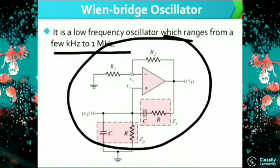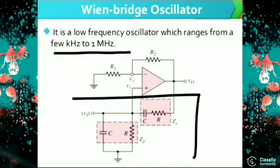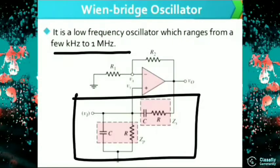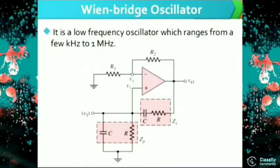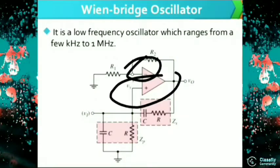This is the diagram of the Wein Bridge Oscillator. This portion is the feedback path which is connected to the non-inverting terminal, and the rest is connected to the inverting terminal. The inverting terminal means your minus and non-inverting means your plus.